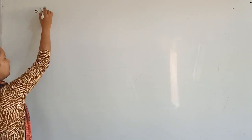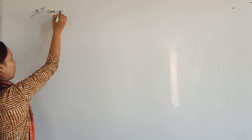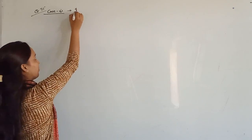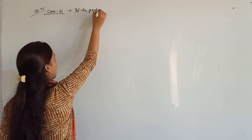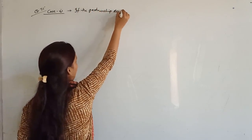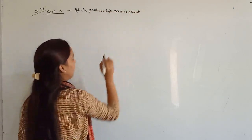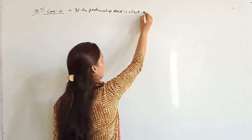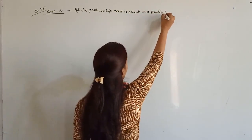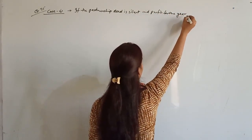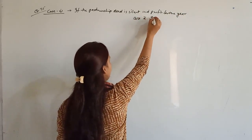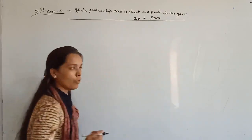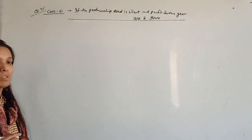Case 1: If the partnership deed is silent as to interest on capital and profits for the year are 9,000 rupees. Since the partnership deed is silent, no interest on capital will be given. The available profits will be distributed among the partners in their profit sharing ratio.